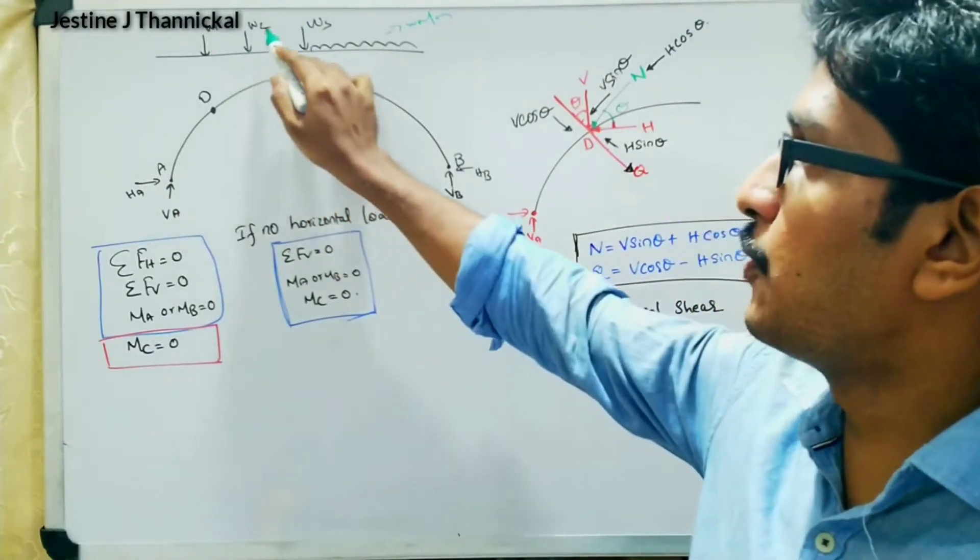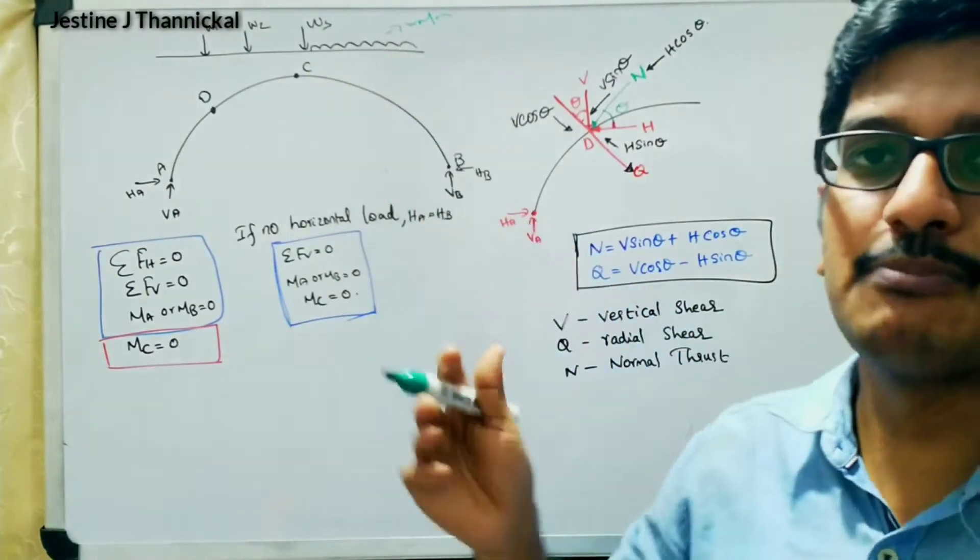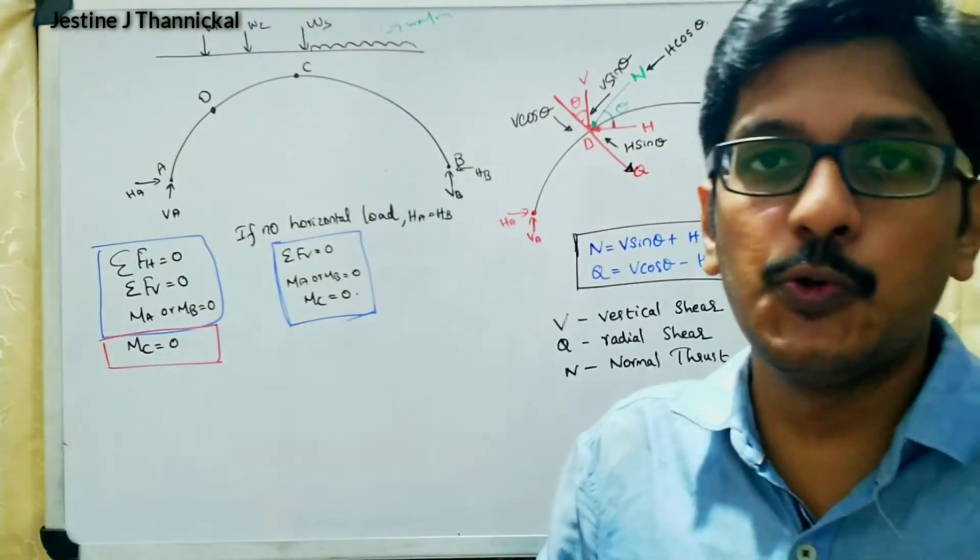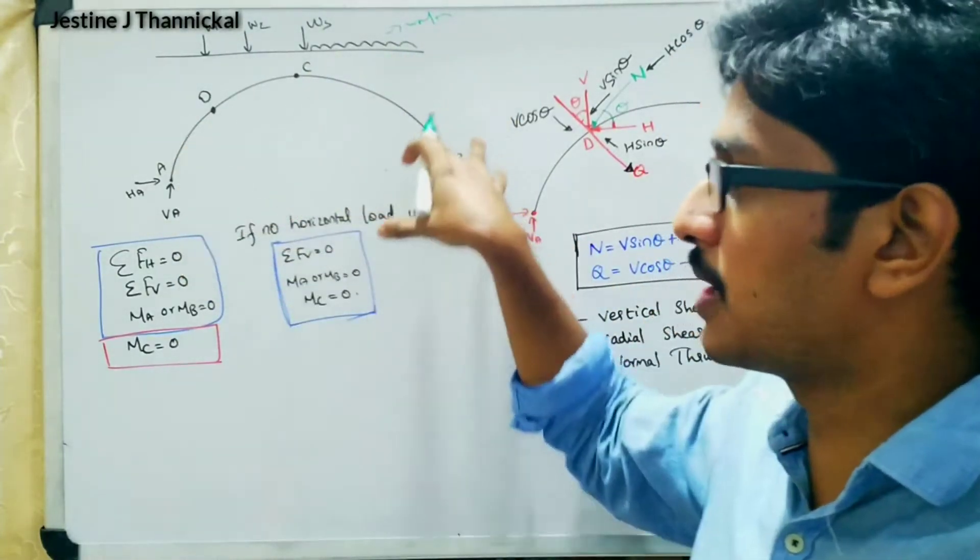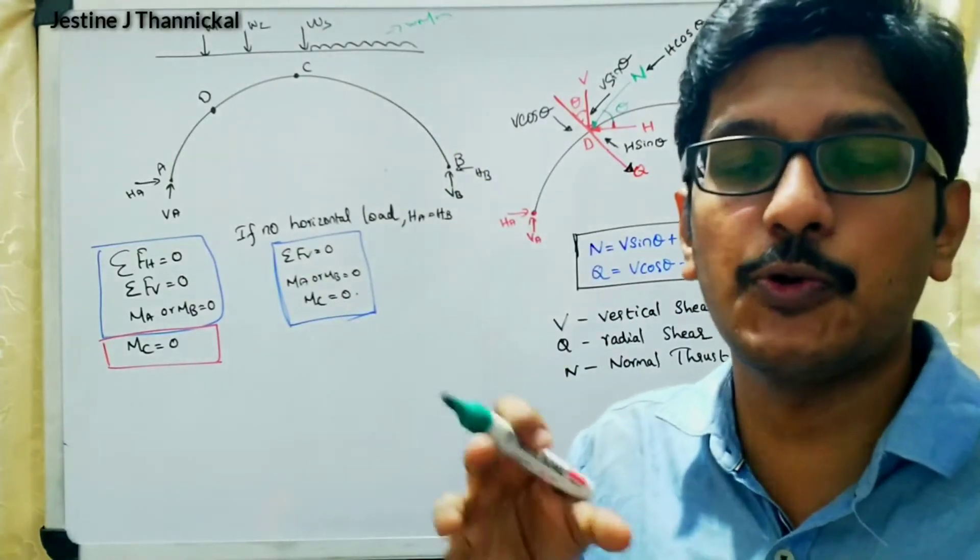And if some loads - W1, W2, and W3, some point loads, some UDL - are acting over the parabolic arches, then what are the reactions going to happen?